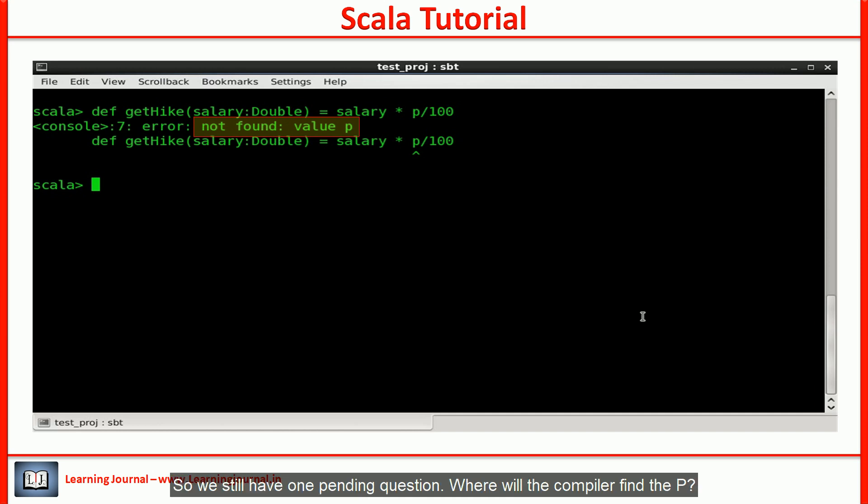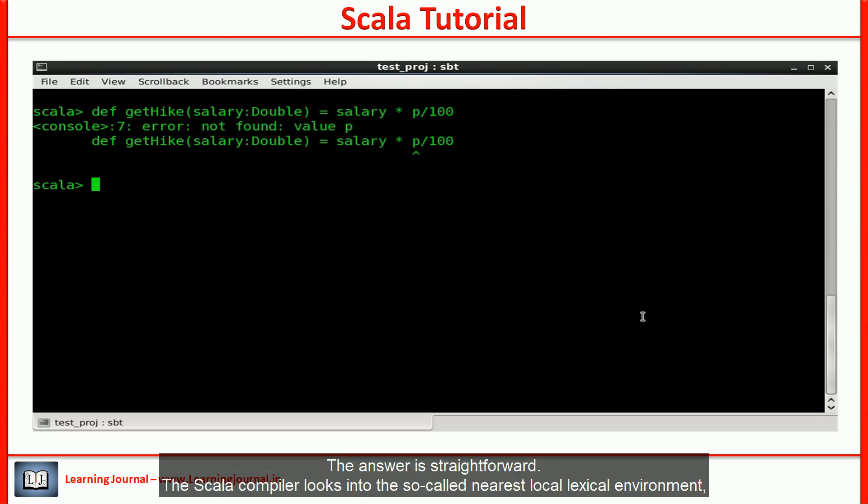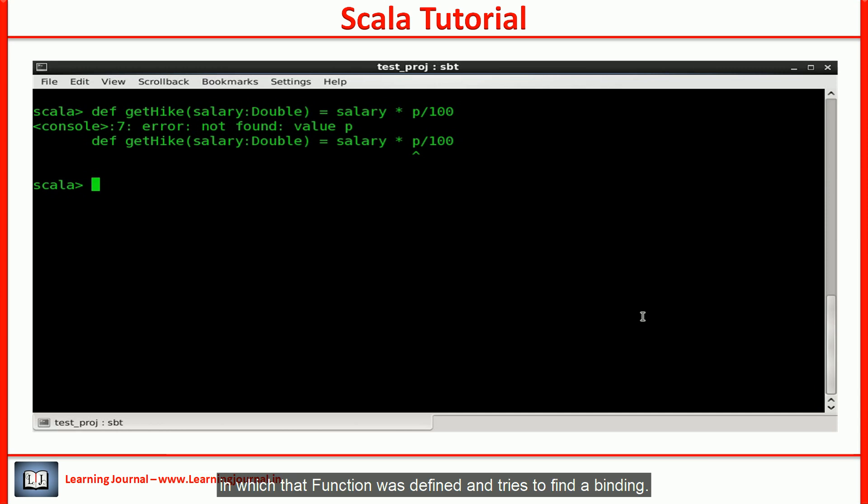So, we still have one pending question: where will the compiler find the p? The answer is straightforward. The Scala compiler looks into the so-called nearest local lexical environment in which that function was defined and tries to find a binding.